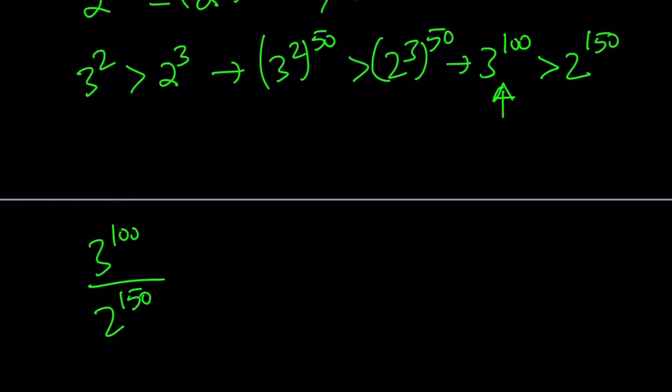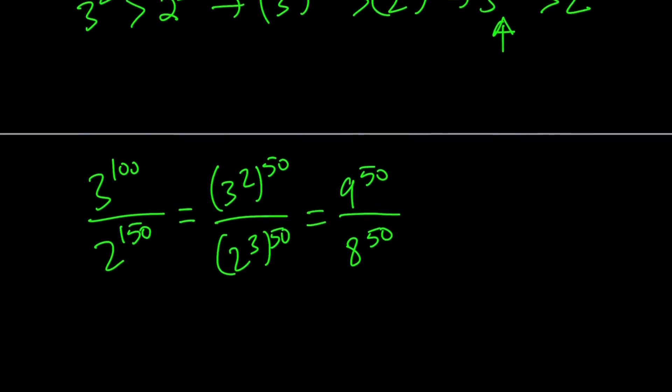So I'm going to go ahead and divide 3 to the power 100 by 2 to the power 150. And this is the most critical part of the solution because this is going to bring a really important fact. So basically, we can write this as 3 to the 2nd to the power 50 over 2 to the 3rd to the power 50.